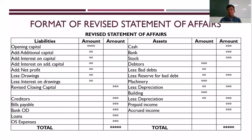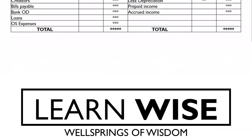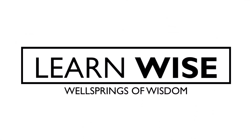What is displayed here on the screen is the format of the revised statement of affairs. On the left side you start off with capital, then you have your liabilities. On the right side you have all your assets listed out. Just like the balance sheet, the revised statement of affairs will have two sides.